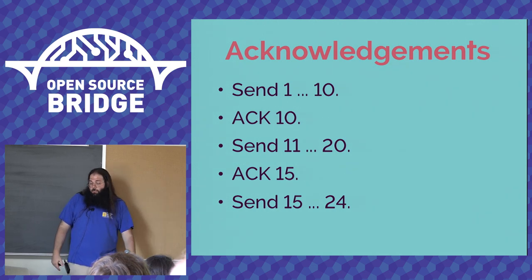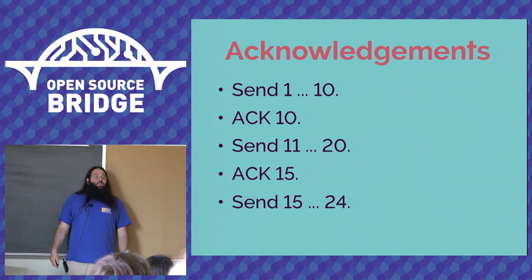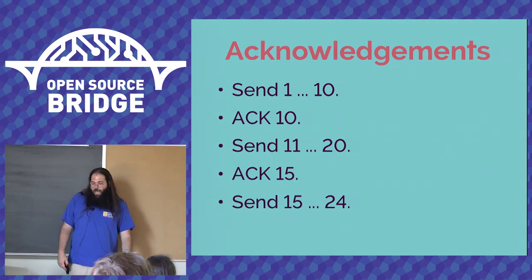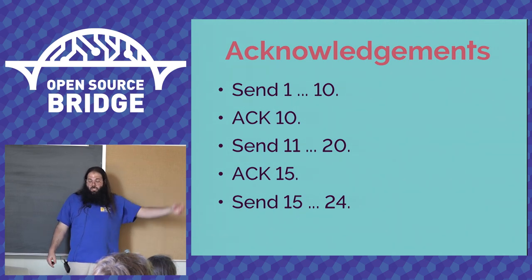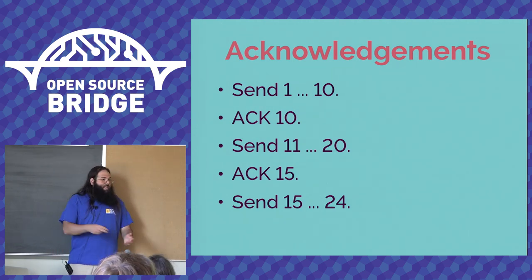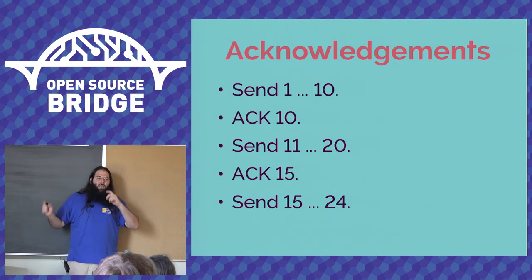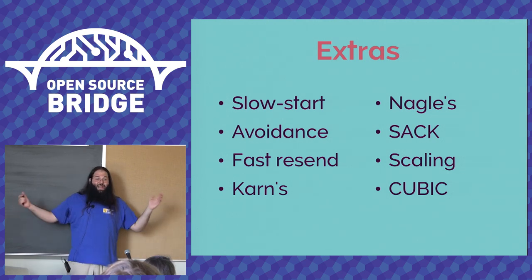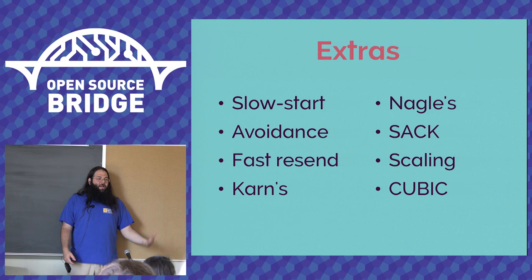TCP uses sequence numbers and acknowledgements so that every time you send a packet, you increment the sequence number. When you exceed the window value — say you send 10 packets — the server sends back a packet saying: I acknowledge I received up through number 10. If the server only acknowledges up to 15 out of packets 11 through 20 sent, something from 16 onward got dropped, and we resend everything we don't know they have. TCP has been retrofitted and upgraded with more optional stuff and supplemental standards than just about anything else in the history of the internet, so if you want to learn how TCP works in the real world, there's a lot of reading.